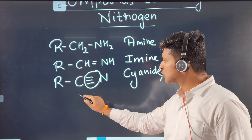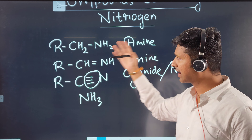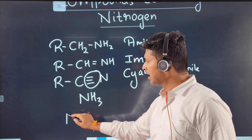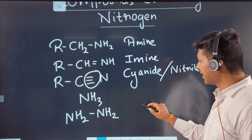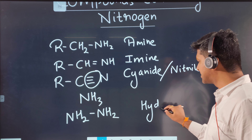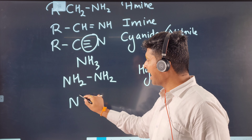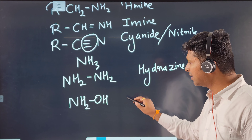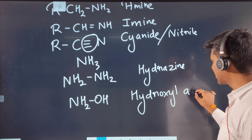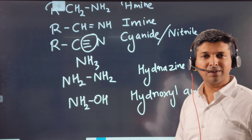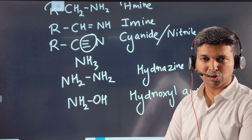All these compounds are derived from ammonia. Ammonia attached to an alkyl group becomes alkanamine or simply amine. Connecting two ammonia molecules — amine and amine — gives hydrazine. An OH connected to NH₂ becomes hydroxylamine. I'm giving you a list of all nitrogen-containing compounds so you can identify every functional group in this chapter.